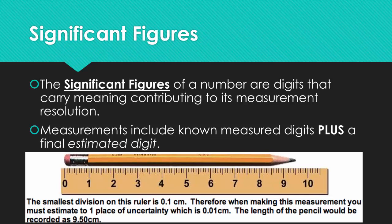Significant figures of a number are digits that carry meaning contributing to its measurement. Measurements include known measured digits plus a final estimated digit.